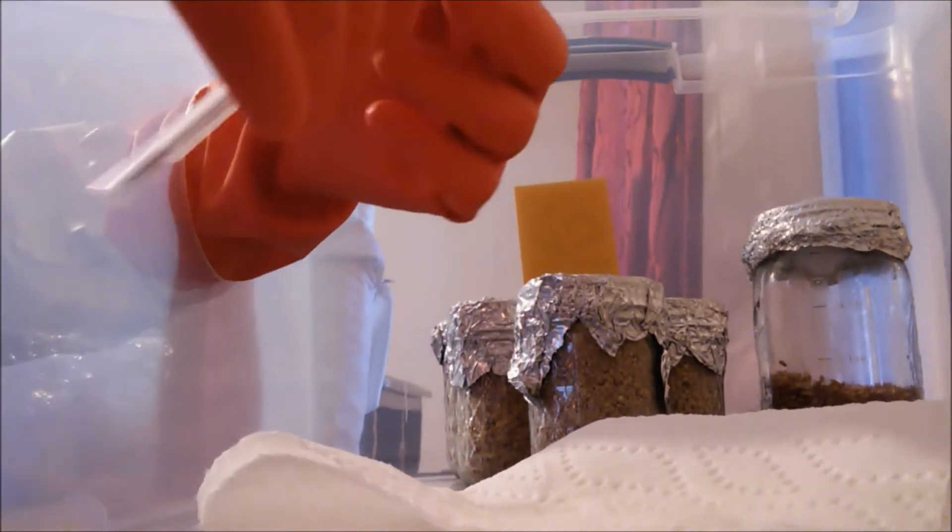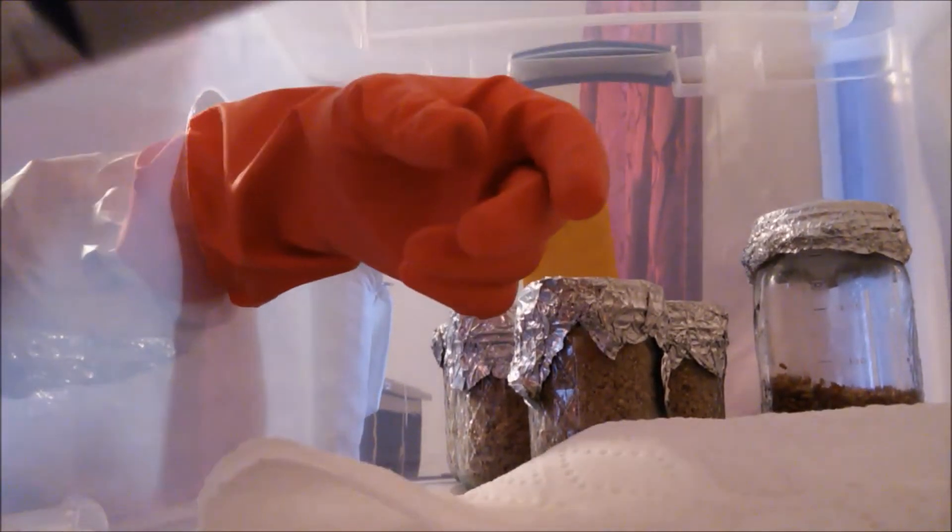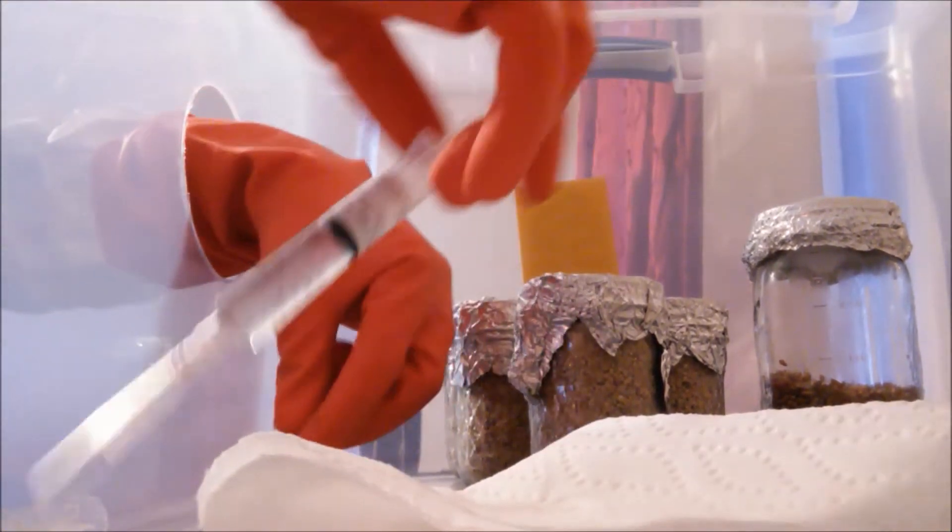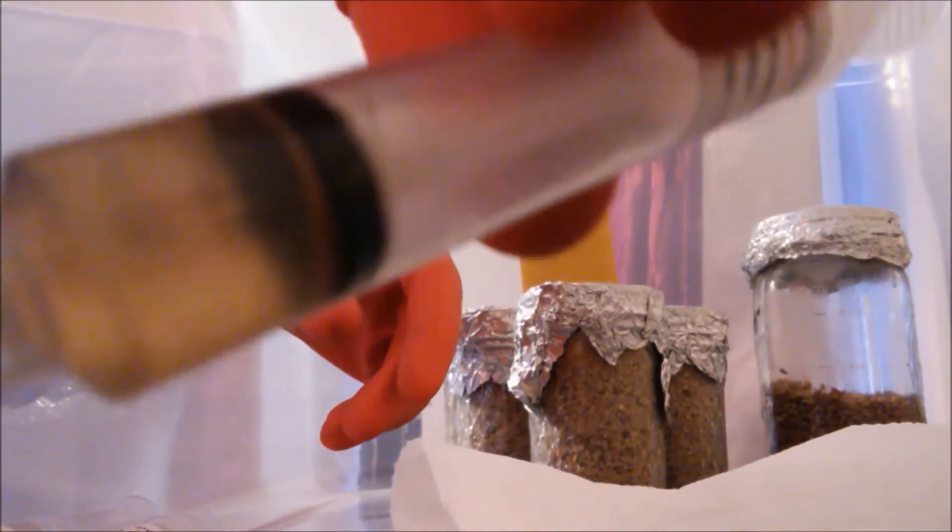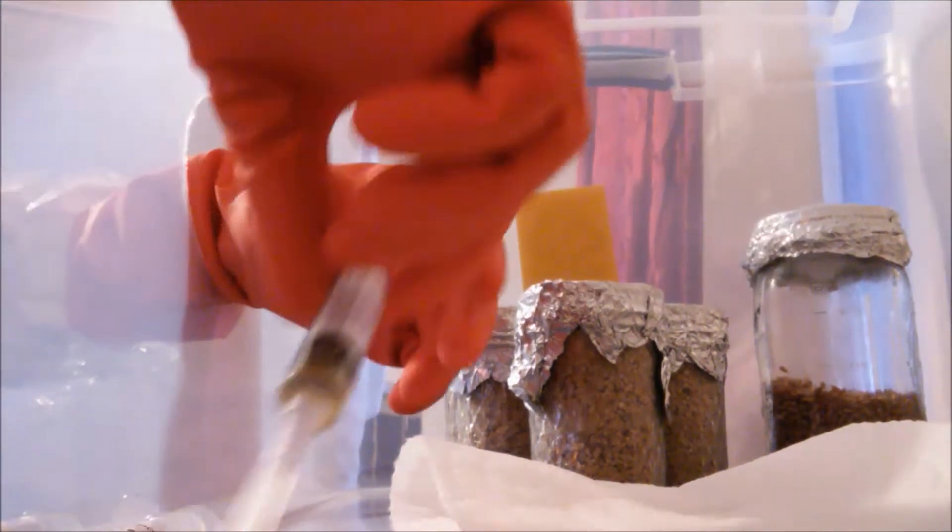We have our white oyster liquid culture. We also have our Lentinula edodes, this is our shiitake liquid culture. And we have our golden oyster liquid culture that we're going to be inoculating.